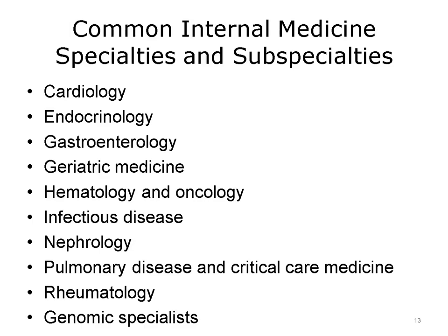Gastroenterology treats diseases of the esophagus, stomach, and intestines. Geriatric medicine provides care for patients who are 65 years or older. Hematology focuses on diseases of the blood, such as anemia, and on cancer. Infectious disease specialists provide treatment for diseases caused by viruses, bacteria, and other microorganisms. Nephrology treats diseases of the kidneys and urinary tract. Pulmonary disease and critical care medicine focuses on diseases of the respiratory system and on patients in critical care units. Rheumatology focuses on diseases of the joints, muscles, and ligaments. Genomic specialists provide diagnostic services and genetic counseling for individuals or families with conditions that have a genetic basis, such as Down syndrome and cystic fibrosis.